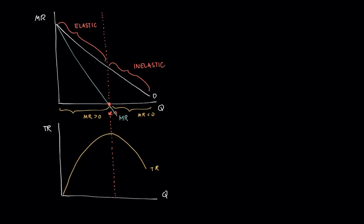So when we are at the elastic portion, as price decreases, what happens is total revenue still increases. Even though price is decreasing but you're selling more, total revenue is still increasing.